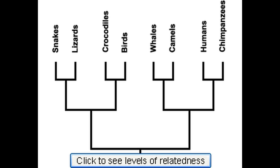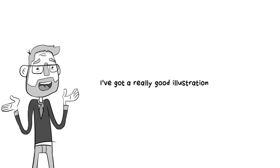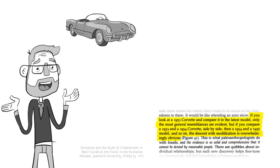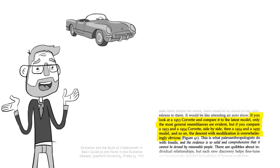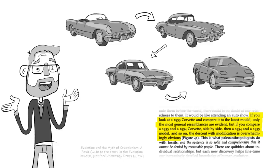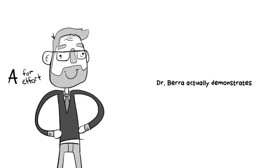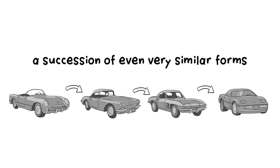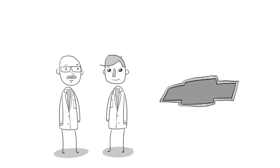LSS was about to answer what the proper explanation for homology is. Let's see what he has to say. Enter biologist Tim Barra, who offers this illustration: if you look at a 1953 Corvette and compare it to the latest model, only the most general resemblances are evident. But if you compare a '53 and '54 side by side and so on, the descent with modification is overwhelmingly obvious. LSS responds that a succession of even very similar forms doesn't demand common descent — it could instead point to a common designer, like the engineers at Chevy.